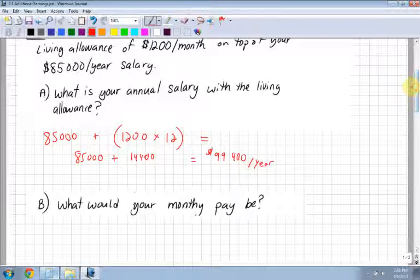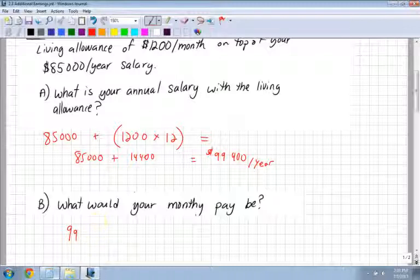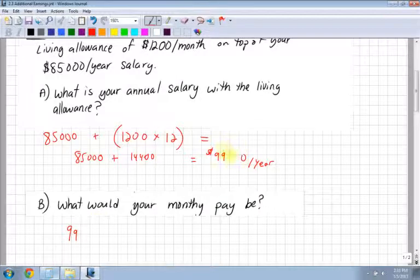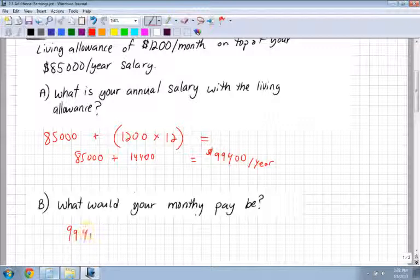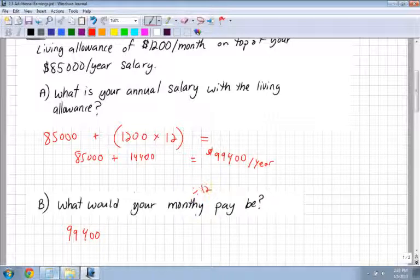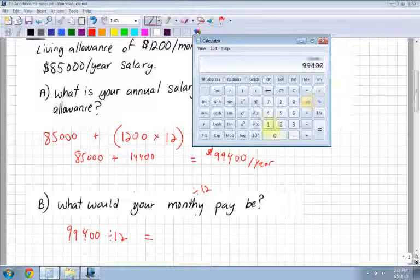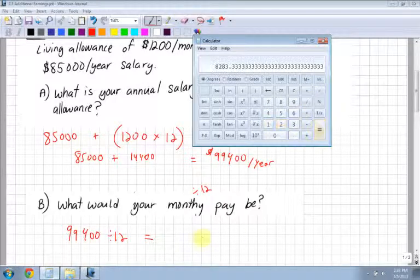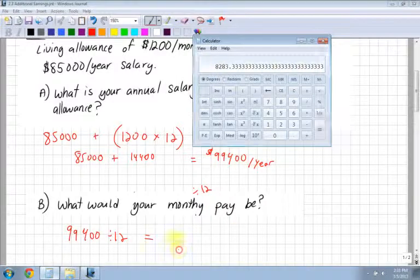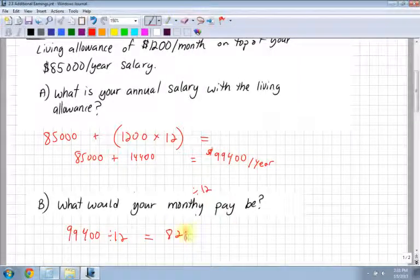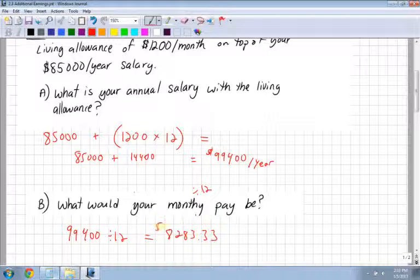Now it says, what would your monthly pay be? What do I have to do with that $99,400? If I'm trying to figure out my monthly pay and this is per year, divide by 12, right? So I divide by 12 to figure out what I'm getting paid gross per month. $8,283.33 per month.